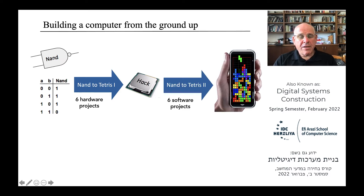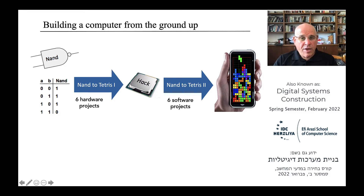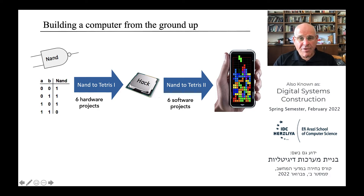we build a software hierarchy consisting of a compiler, a virtual machine, an assembler, and even a small operating system that, taken together, allow you to write programs for this computer using a modern high-level object-based language which is very similar to Java and Python.